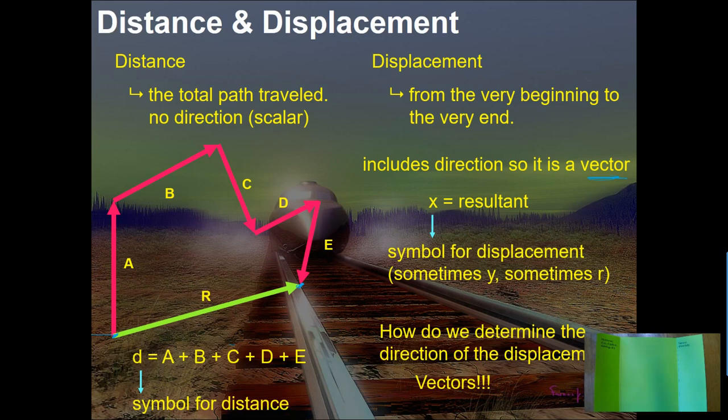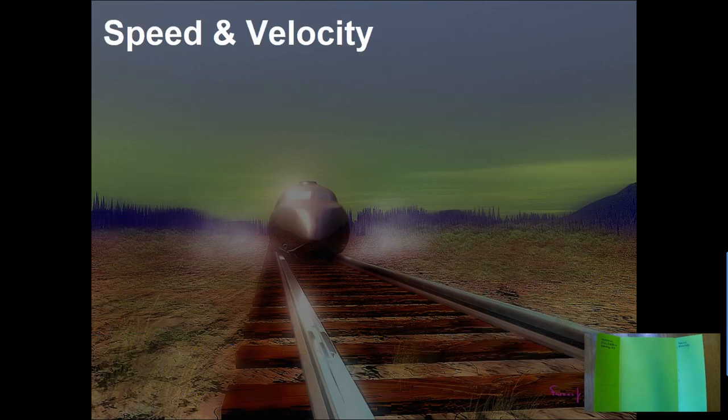That's the difference between distance and displacement. Distance is a scalar. Displacement is a vector. Both are going to be measured in meters. For example: 'I walk six meters' — that's a distance. 'I walk six meters toward the refrigerator' — that's a displacement.